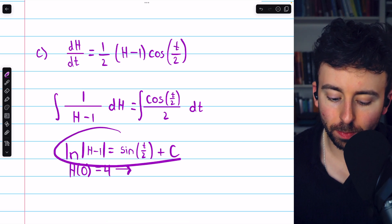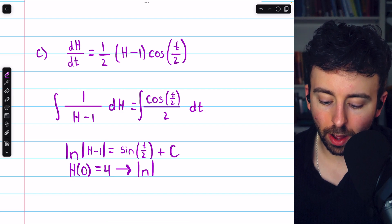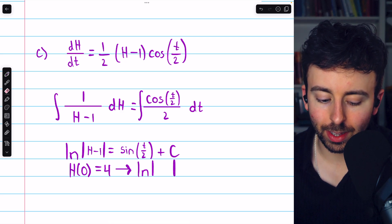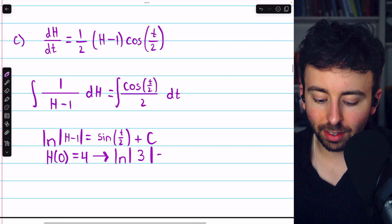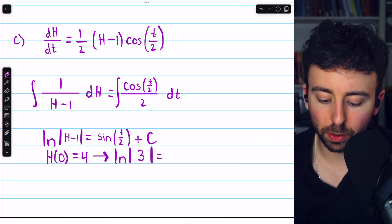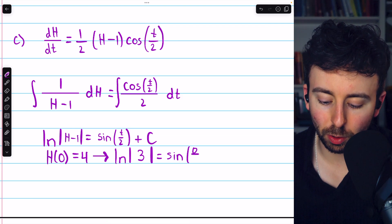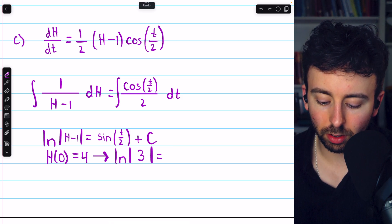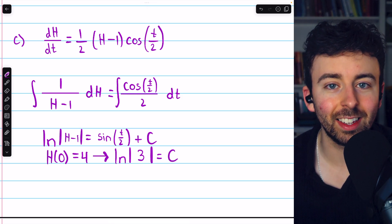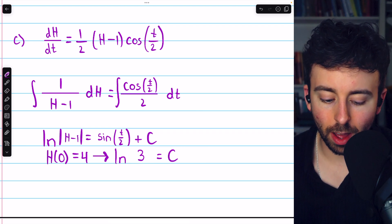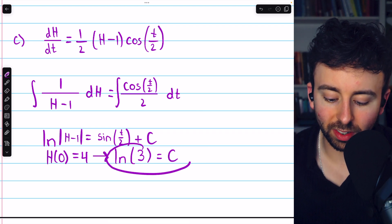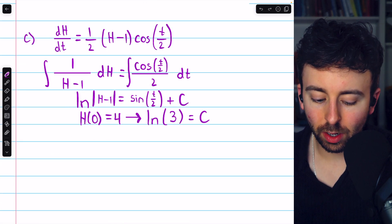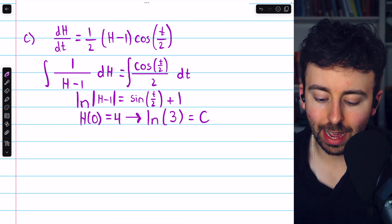That initial condition was that h(0) is equal to four. So, plugging that information into this equation, we have the natural log of h is four. So, this is the natural log of (4 minus 1), or simply the natural log of three. And this is equal to sine of (t/2), but we're plugging in t equals zero. That's sine of (0/2), and sine of (0/2) is just zero. So, we're really just left with the arbitrary constant c. The absolute value with the natural log, we don't need that because three is positive. So, c is equal to the natural log of three.